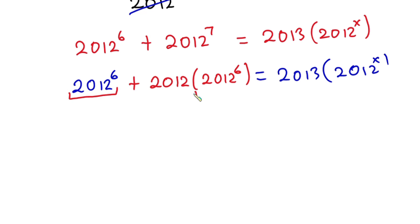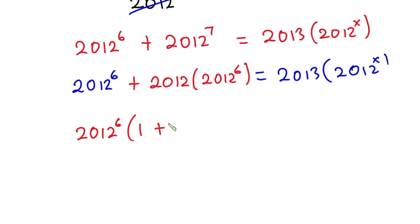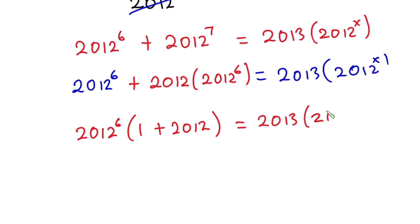Now you can see we have 2012 to the power 6 in both terms on the left, so let's factor it out. We have 2012 to the power 6 times the quantity one plus 2012, and this is equal to 2013 times 2012 to the power x.